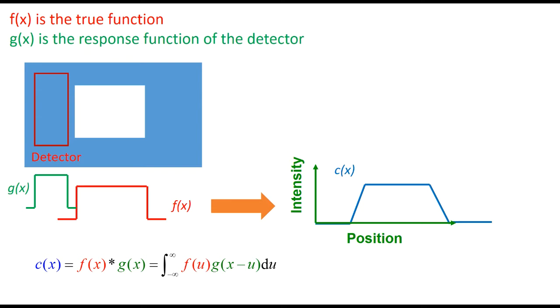f(x) and g(x) in this case are both rectangular functions, and c(x) has sloping sides. The mathematical definition of convolution is given at the bottom of the slide. It involves the integral of the product of the two functions, but with the introduction of a dummy variable, in this case u.